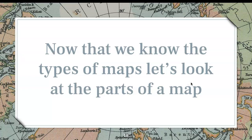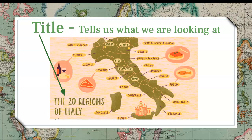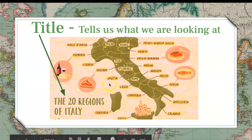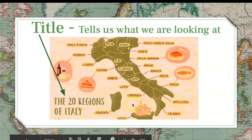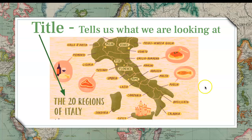Now that we know three different types of maps, let's look at the parts of a map. Not every map you will see has a title, but the title tells us what we are looking at. So the title of this map is 'The 20 Regions of Italy.' You can see they've identified the 20 regions with these little borders, and then if something is really popular there, they add in an icon — fish, pasta, wine, meat, and then Sicily for their cathedrals.